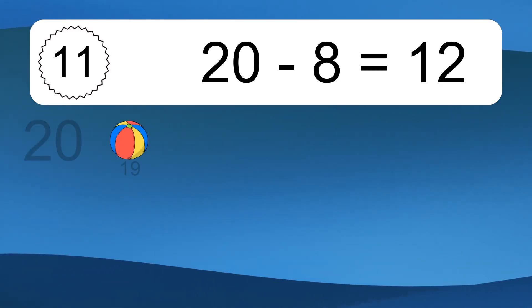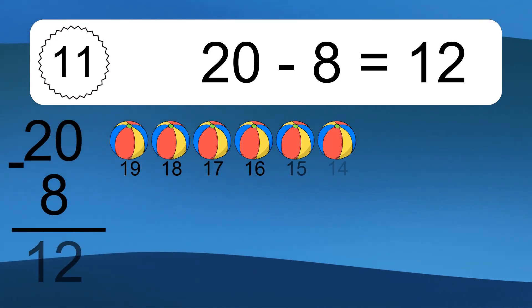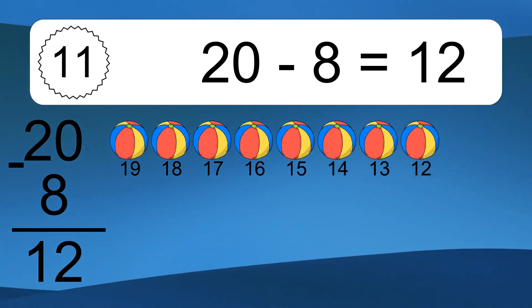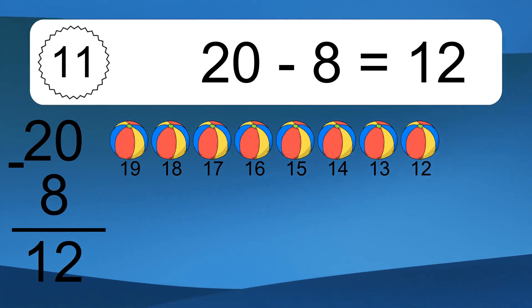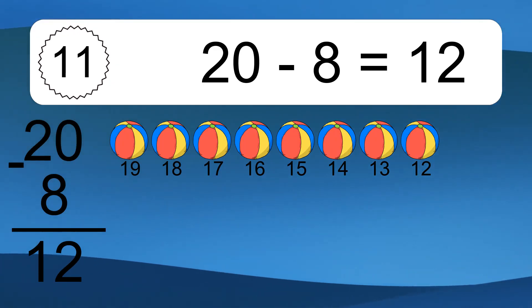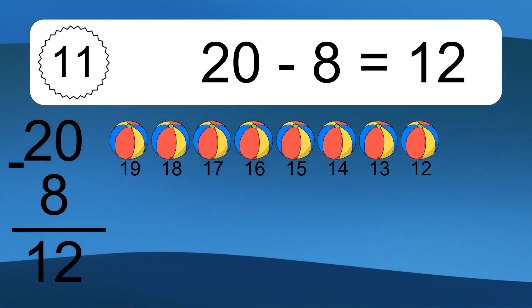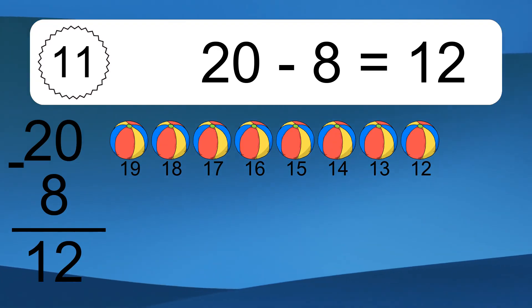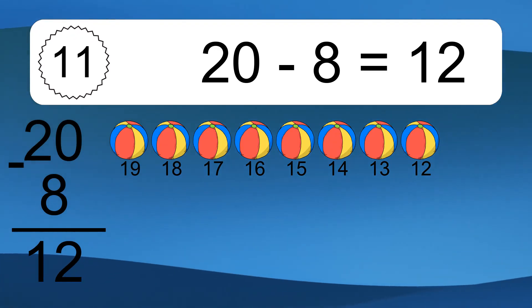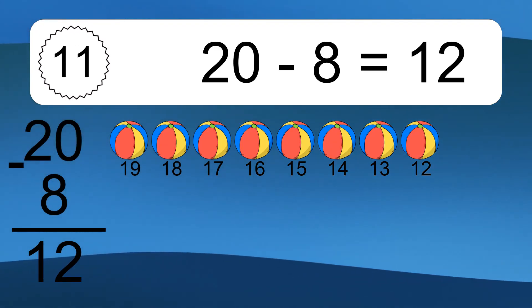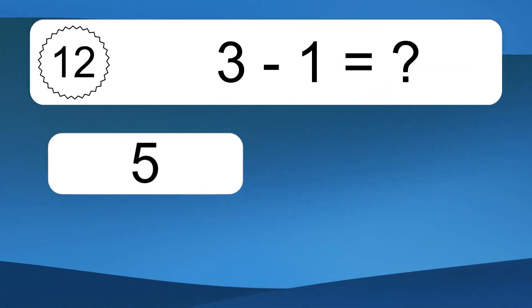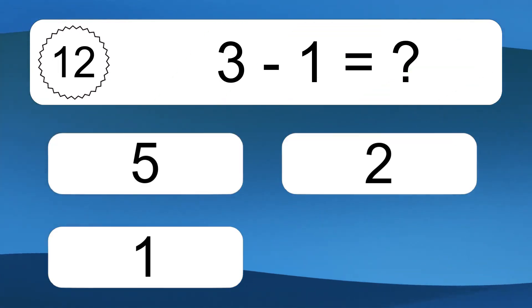20 minus 8 equals what? 20 minus 8 equals 12. Let's count it: 19, 18, 17, 16, 15, 14, 13, 12.